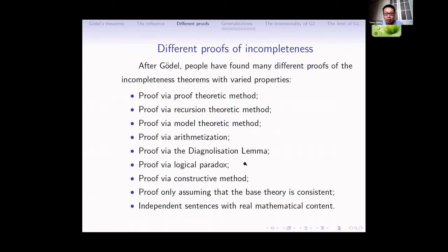Now I talk about different proofs of incompleteness. People have found many different proofs after Gödel. Here is a summary: proof by syntactic methods, proof by recursion-theoretic methods, proof by model-theoretic methods, proof by arithmetic methods, by arithmetization and the diagonalization lemma, by logical paradoxes, by constructive methods, and proofs assuming only that the base theory is consistent. A proof may have several of these properties — they are not exclusive.